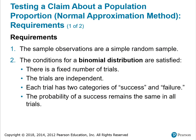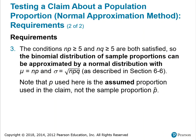Requirements that must be met: the sample observations are a simple random sample. The conditions for a binomial distribution are satisfied — there's a fixed number of trials, trials are independent, two outcome categories, and the probability of success remains the same in all trials. The third requirement: the conditions N times P is greater than or equal to 5 and N times Q greater than or equal to 5 are both satisfied, so the binomial distribution of sample proportions can be approximated by a normal distribution.